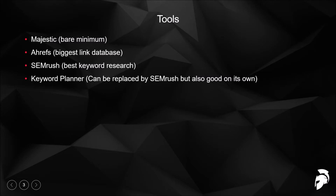Ahrefs has the biggest link database, so you'll find the biggest volume of links that Majestic may not have. Ahrefs also has some cool tools similar to SEMrush — they're all competitors trying to compete with each other. Ahrefs has some similar features to SEMrush, which I'll show you in a minute.